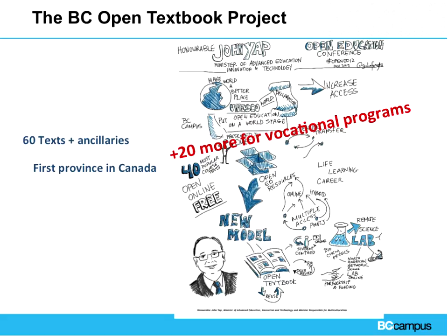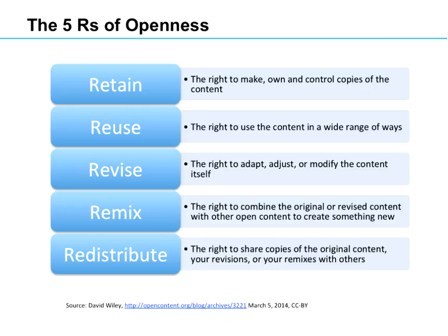The British Columbia Open Textbook Project at BC Campus started with the 40 top subject areas within first and second year university courses across British Columbia, seeking to find textbooks addressing the needs of these highly enrolled courses. We've recently acquired more funding through our ministry to do 20 more textbooks for vocational programs, including not only textbooks but also ancillary resources. Excitingly, we're actually the very first province in Canada to do an open textbook project, and we're working with Alberta and Saskatchewan to help them initiate similar projects.